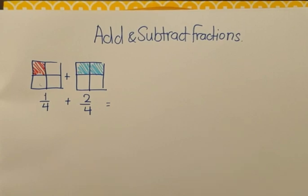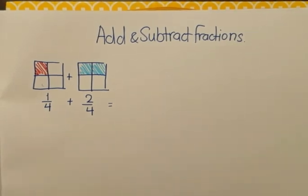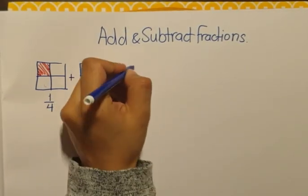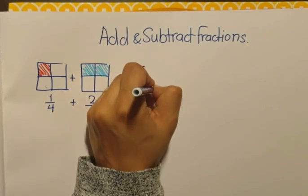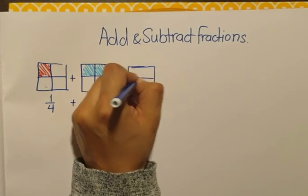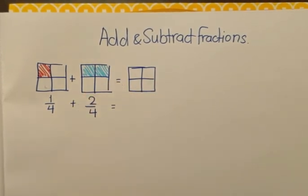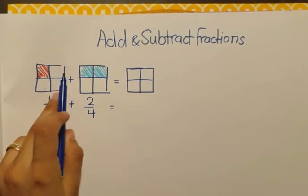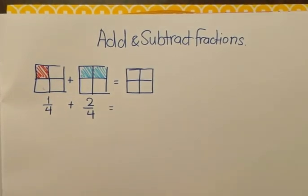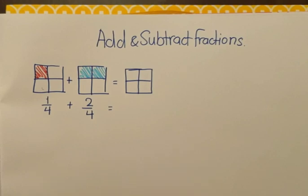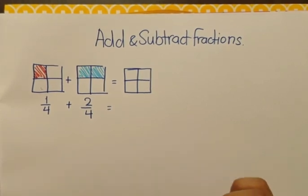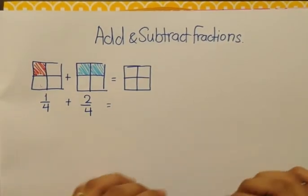Now, the key thing to know about adding and subtracting fractions is that I'm adding the total number of shaded parts. I'm not adding all of the tiny squares on the inside. I'm only adding the total number of shaded parts.